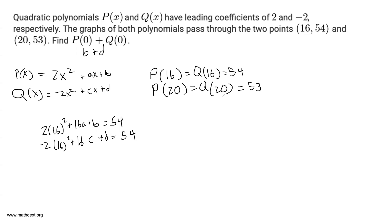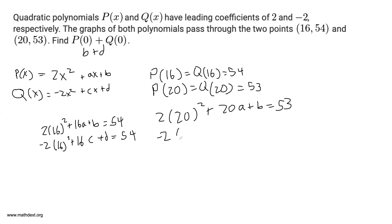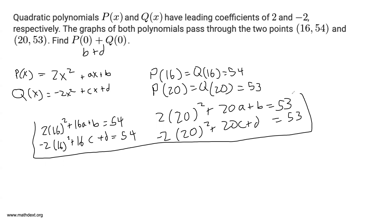Since p(20) and q(20) are both 53, let's plug in 20: 2(20²) + 20a + b = 53. We're also given -2(20²) + 20c + d = 53 as well. So we have these four equations, and from them we want to find b + d.